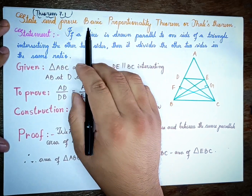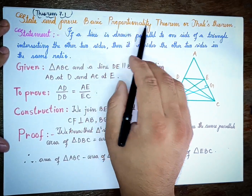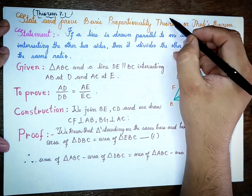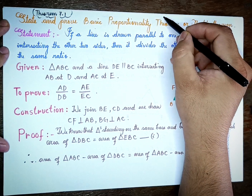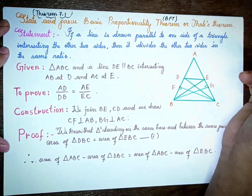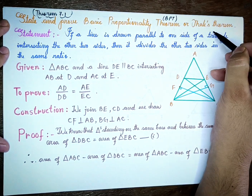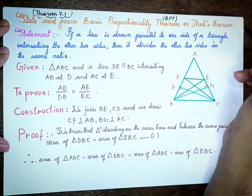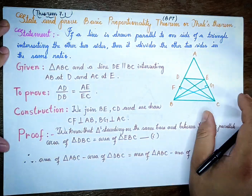The Basic Proportionality Theorem is B.P.T. What does this mean? The theorem tells us the following statement.